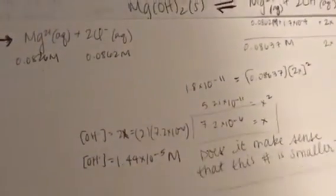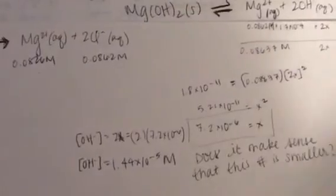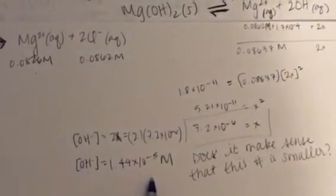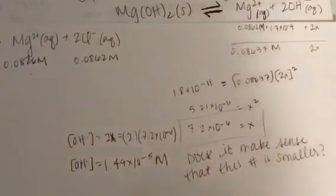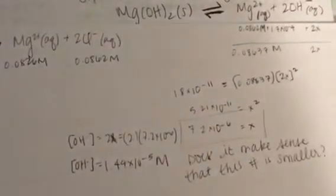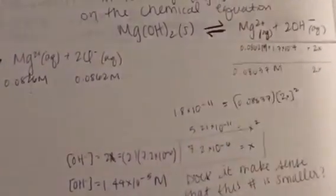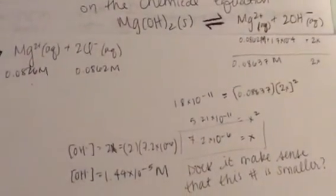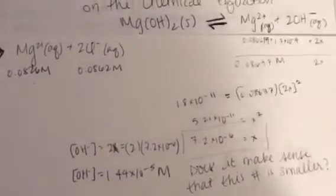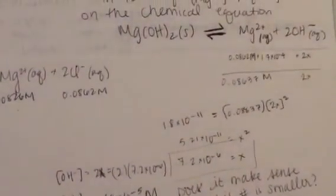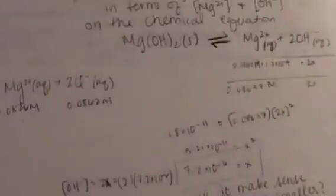And now I want to solve that for OH concentration, so I have to multiply that by 2, and I end up getting an OH concentration of 1.4 × 10⁻⁵. So the question is: does this make sense that the number is smaller when I start with some amount of magnesium chloride or magnesium 2 plus in solution? Because originally I had an OH concentration of 3.4 × 10⁻⁴.